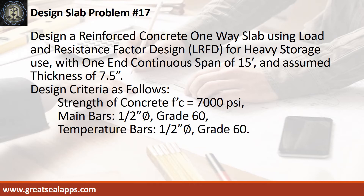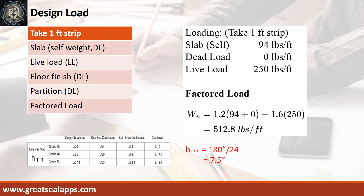Design criteria as follows: strength of concrete, 7,000 PSI; main bars, 1/2 inch diameter, grade 60; temperature bars, 1/2 inch diameter, grade 60. The uniform load for 7.5 inches thick slab is 94 pounds per foot. A heavy storage live load is 250 pounds per foot, for a total factored load of 512.8 pounds per foot.